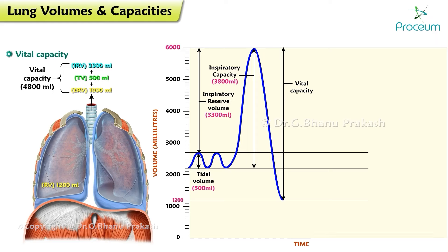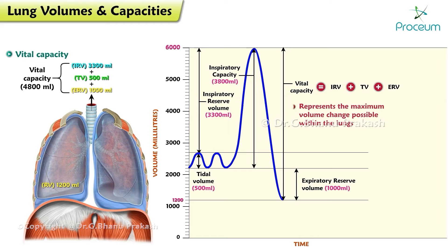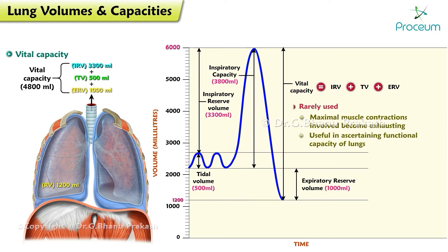The subject first inspires maximally, then expires maximally. Vital capacity is equal to inspiratory reserve volume plus tidal volume plus the expiratory reserve volume. The vital capacity represents the maximum volume change possible within the lungs. It is rarely used because the maximal muscle contractions involved become exhausting, but it is useful in ascertaining the functional capacity of the lungs. The average value of vital capacity is 4,800 milliliters.